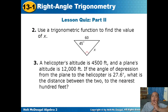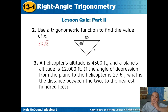Quiz number 2: use a trigonometric function to find the value of x. Quiz number 3: a helicopter's altitude is 4,500 feet and a plane's altitude is 12,000 feet. If the angle of depression from the plane to the helicopter is 27.6 degrees, what is the distance between the two to the nearest 100 feet? These are the answers — show your complete solution.